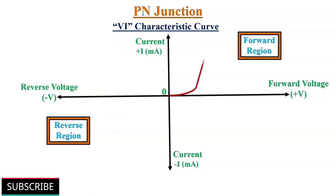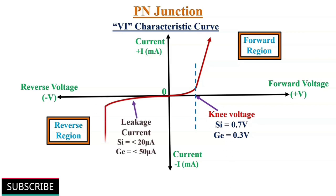The following graph shows VI characteristics of semiconductor diode in forward bias and reverse bias conditions. We must consider this graph before selecting a diode.